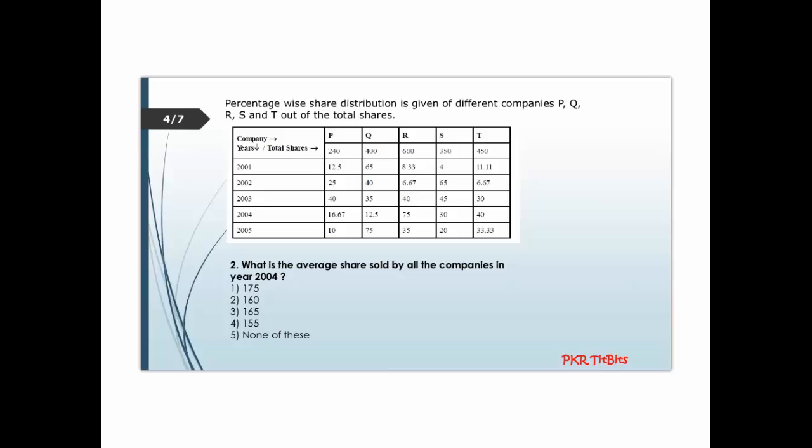Second question: what is the average shares sold by all the companies in the year 2004? In 2004, 16.67 percent is 1/6, so for company P we have 440 divided by 6.